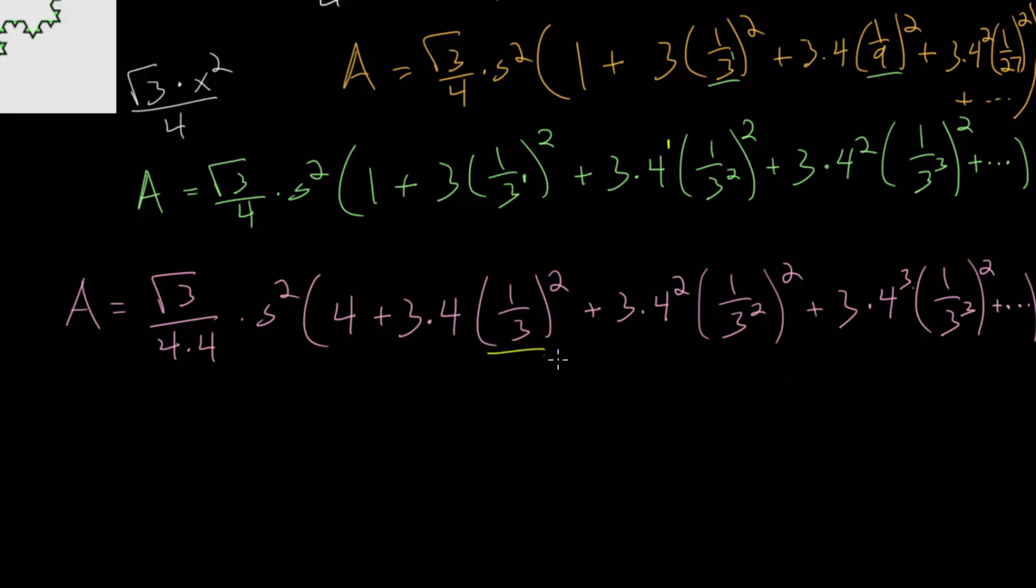And from here we can take all of these terms where we are squaring these different powers of 3 and actually multiply them out. Meaning that 1 over 3 squared, 1 third times 1 third, this is just 1 ninth.